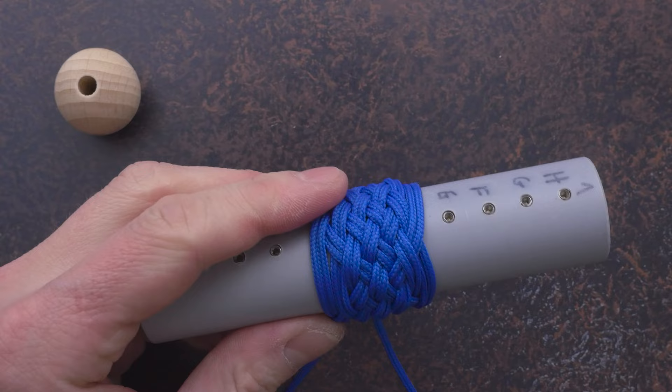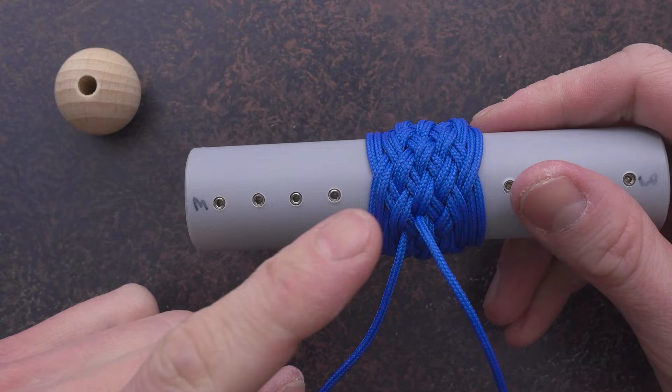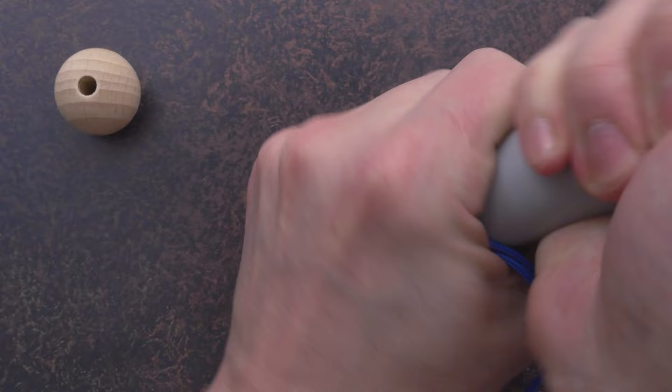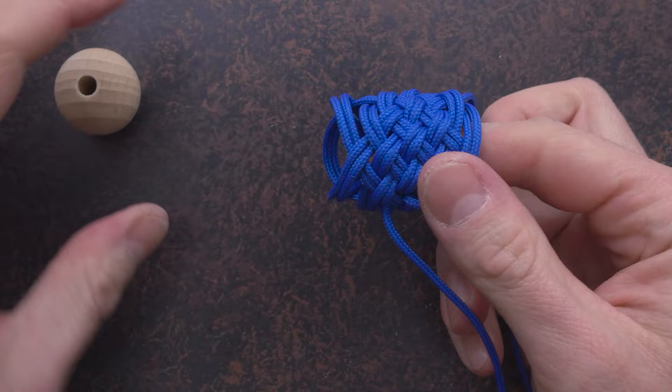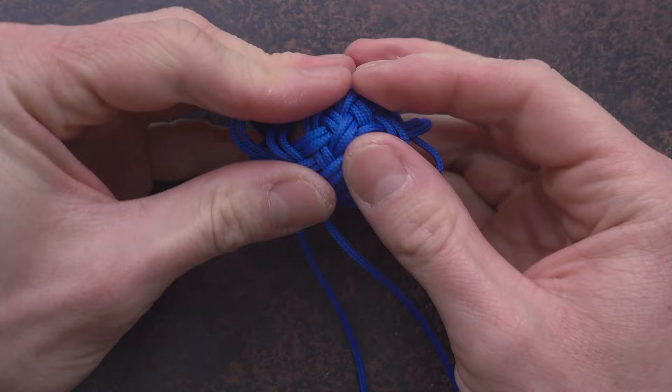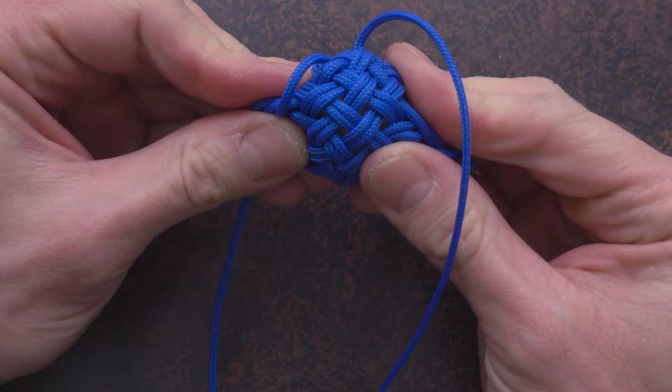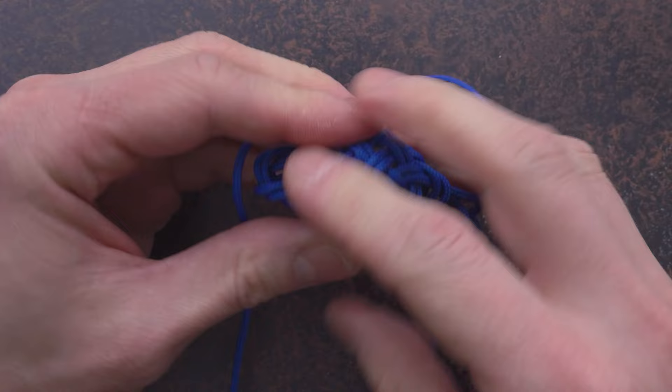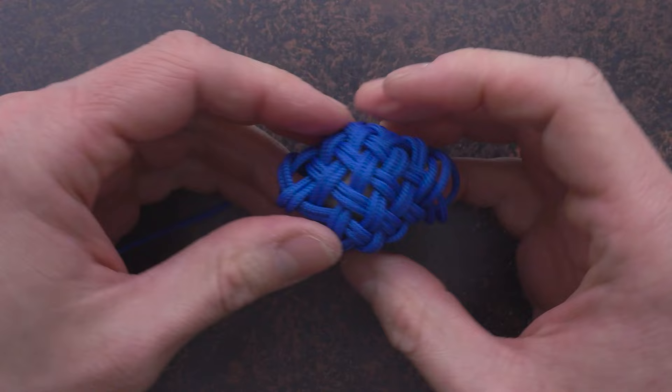After two passes of tightening, my knot is as tight as it can be, so I'm going to transfer it onto the core. Shape up the knot, even it out, spread it apart a bit. Make it look nice before you tighten it up. Something like this.